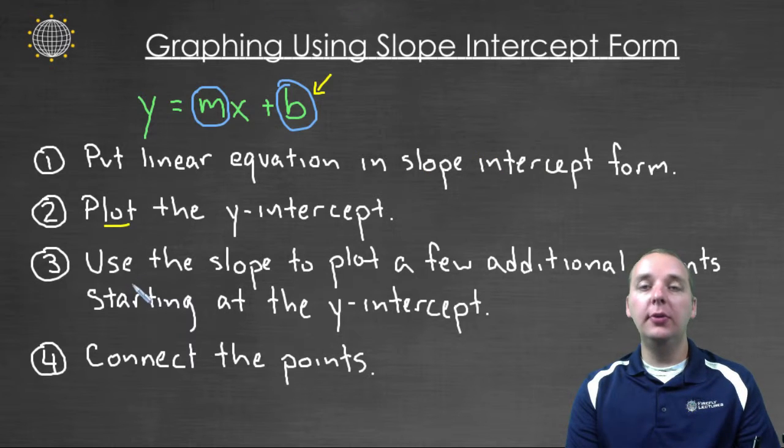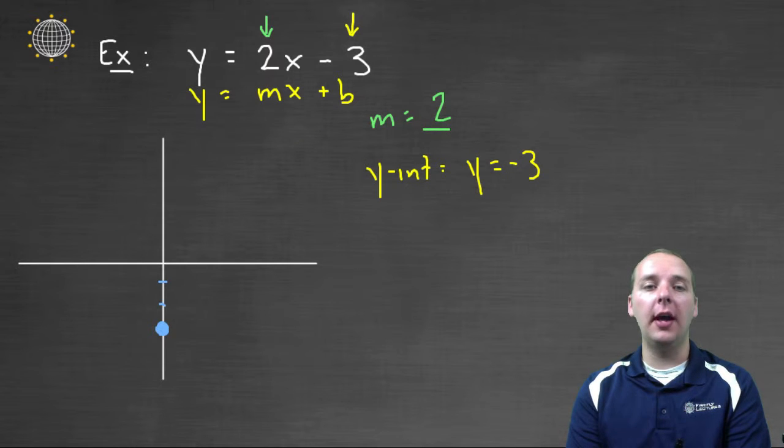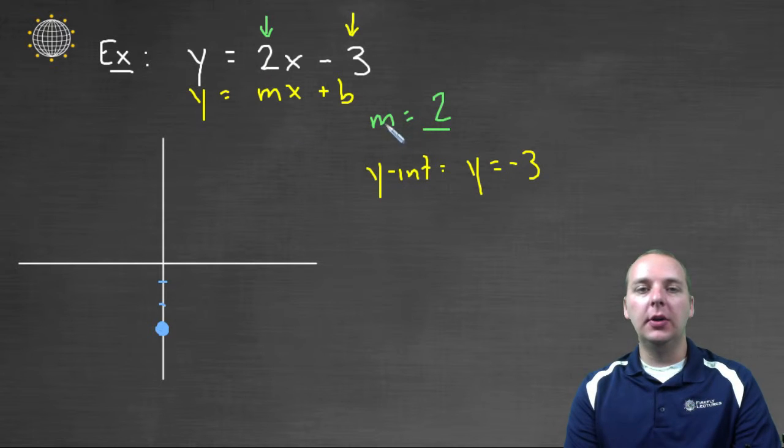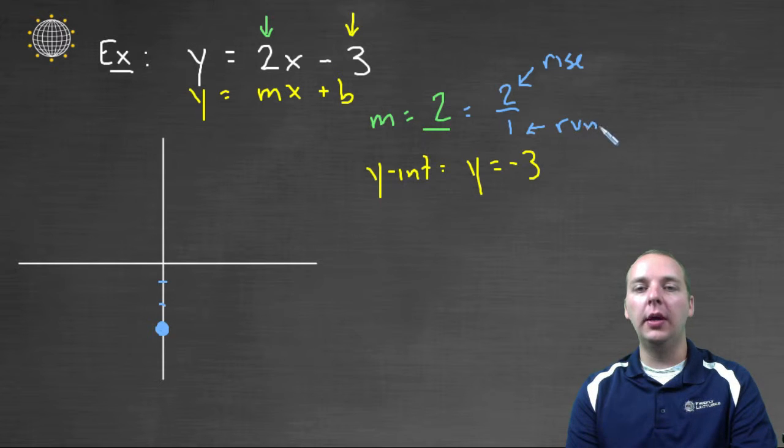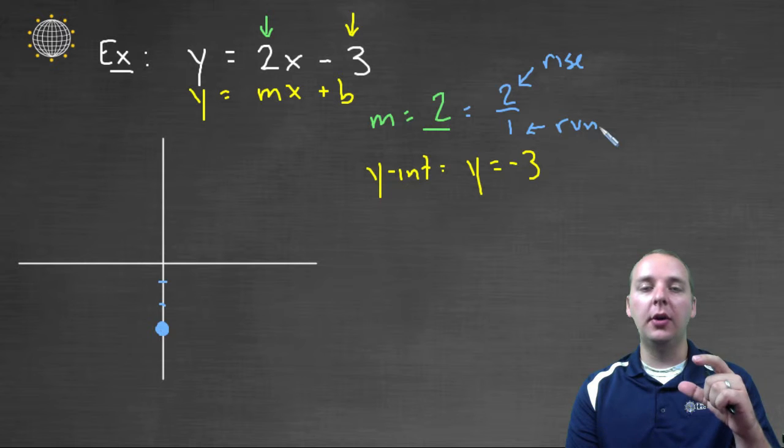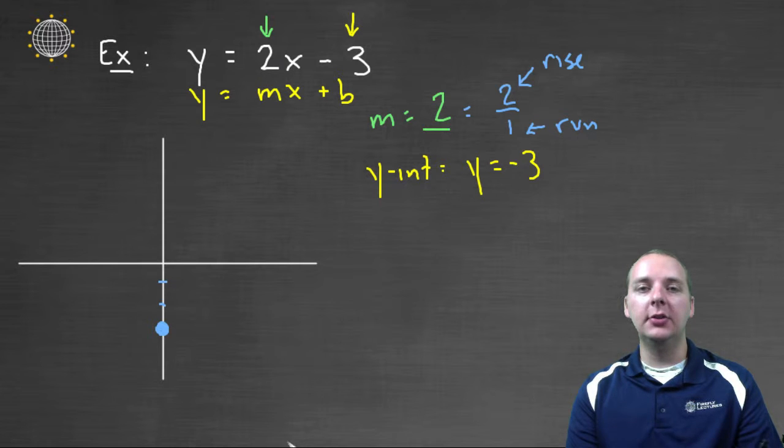Next step, we're going to use the slope of two to plot a few additional points in addition to the y intercept, and we're going to start at the y intercept. So a slope of two, that doesn't do any good written as an integer, so let's write this as a fraction, two over one. That's still two, but what I can see more easily when it's written like that, is that the rise between one point and another on the line is two, compared to the run, which would be one. So that ratio between the rise to the run, for any two points on the line, will be two to one.